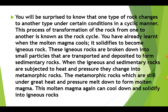This process of transformation of rock from one type to another is known as the rock cycle. When the molten magma cools, it solidifies to become igneous rock. These igneous rocks are broken down into small particles that are transported and deposited to form sedimentary rocks. When igneous and sedimentary rocks are subjected to heat and pressure, they change into metamorphic rock. The metamorphic rocks, still under great heat and pressure, melt down to form molten magma, which again cools and solidifies into igneous rocks.